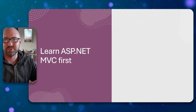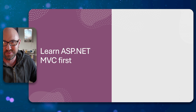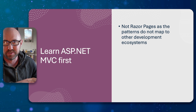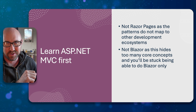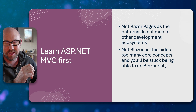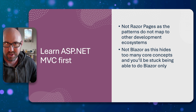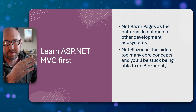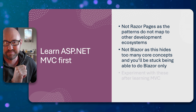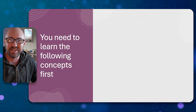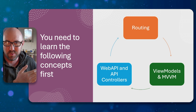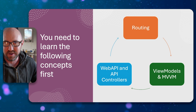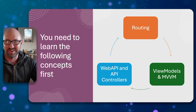Once you are ready to move on to web applications, you should learn ASP.NET MVC first before you do anything else. Don't learn Razor Pages because the patterns in Razor Pages do not map to other web application frameworks such as Ruby on Rails or Node. And don't learn Blazor as your first web application framework in .NET — it's an abstraction over an abstraction over an abstraction, and you will not learn anything. It is an extremely clever piece of technology, but it's not for beginners. The reason you need to learn .NET MVC is because these three core concepts will be everything in C# and .NET web application frameworks: routing, view models and MVVM, and Web API and API controllers. These are the table stakes — do not move on until you know what these are.